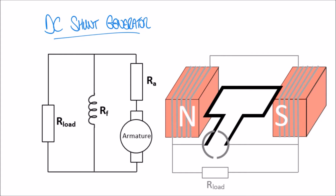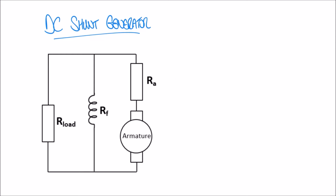Let's look at how we can calculate the output current — the current that will flow to the load — in the case of a DC shunt generator. Let's say our armature produces a voltage of 100 volts, the resistance of the armature is 5 ohms, the resistance of the field windings is 30 ohms, and the resistance of the load is 10 ohms.